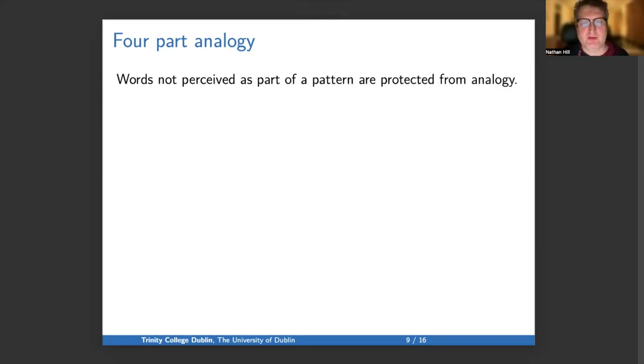Words not perceived as part of a pattern are generally protected from analogy. In German, the way the adjective near forms its comparative and superlative is nah, näher, nächste, and that is the inherited pattern. The direct cognates of those forms in English are nigh, near, and next.